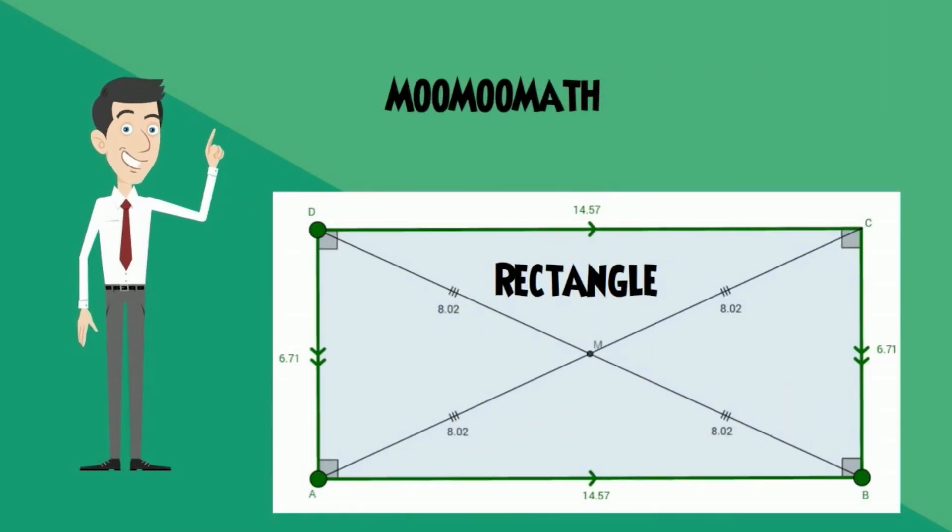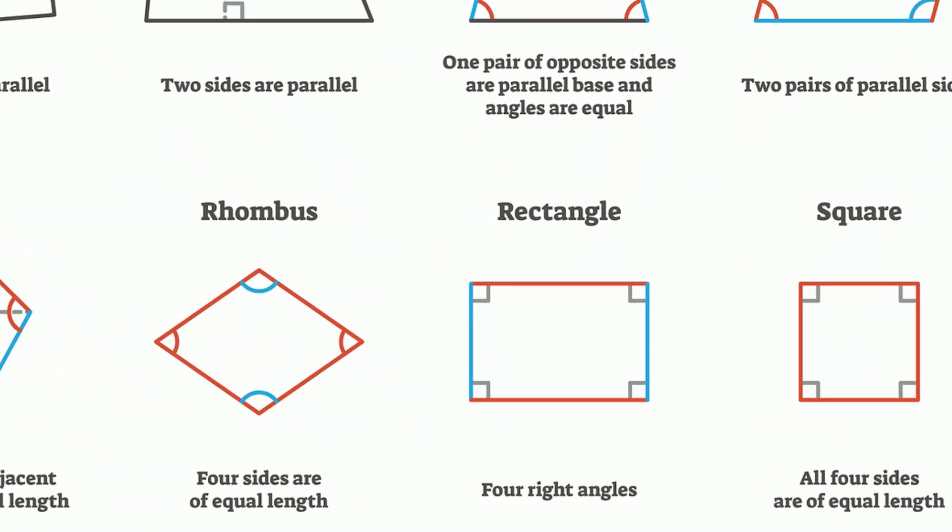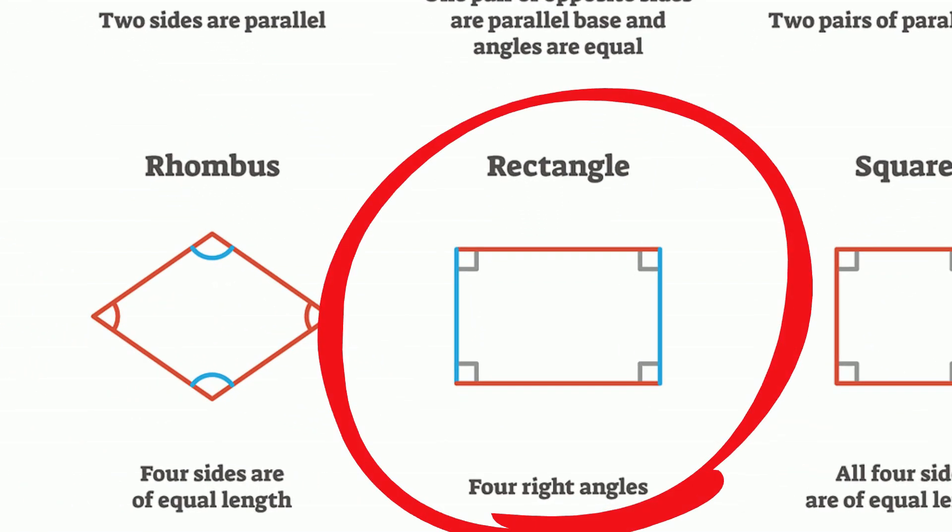In this video, I'd like to talk about the properties of a rectangle. A rectangle is part of the quadrilateral family, which means it is a plane shape with four sides. In addition, it has several other properties.